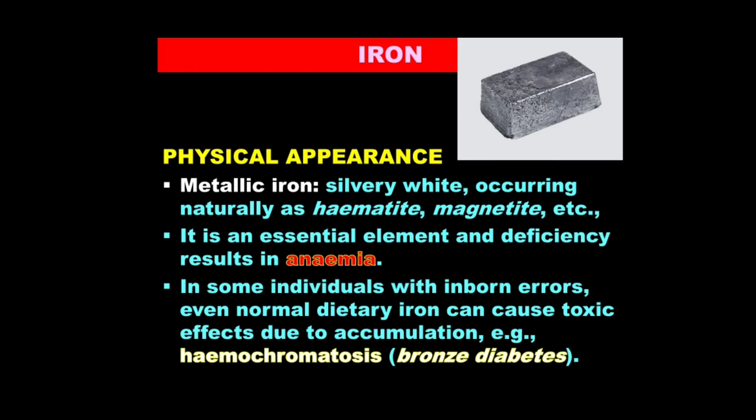Hemochromatosis results very often from an inborn error or genetic defect, but it can also result as a secondary phenomenon — for instance, blood transfusion-related hemochromatosis, also seen in severe hemolysis. The name bronze diabetes refers to the fact that the skin becomes highly tanned or altered in color as a result of this condition. So hemochromatosis and bronze diabetes refer to the same condition of iron accumulation.